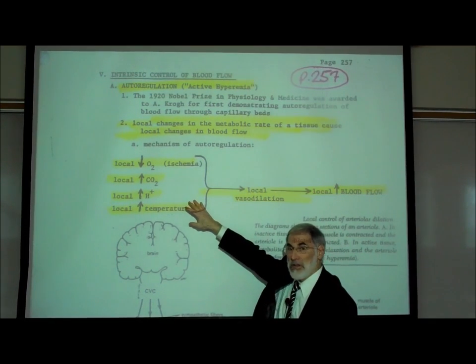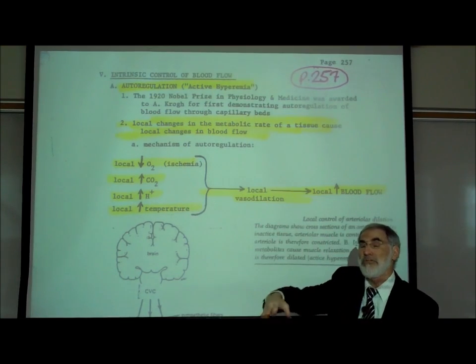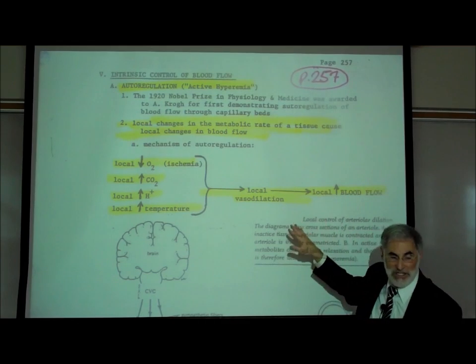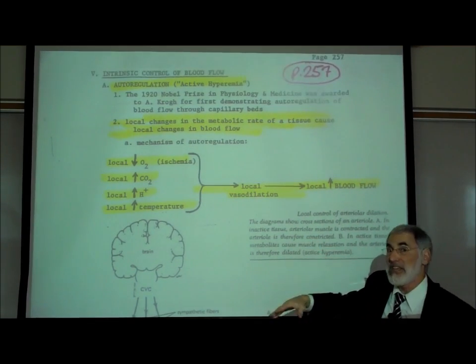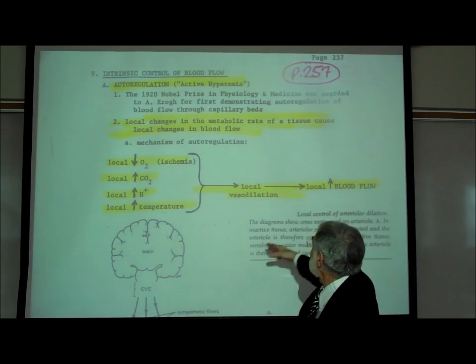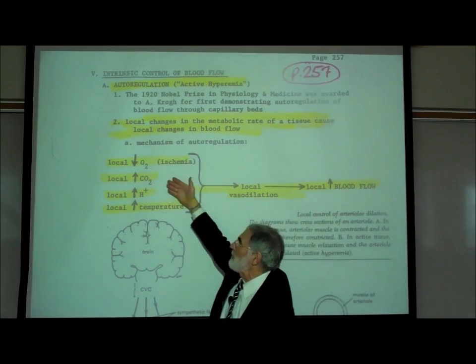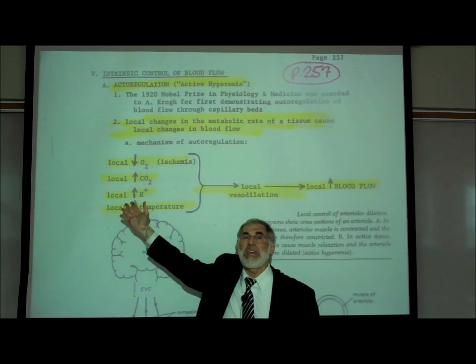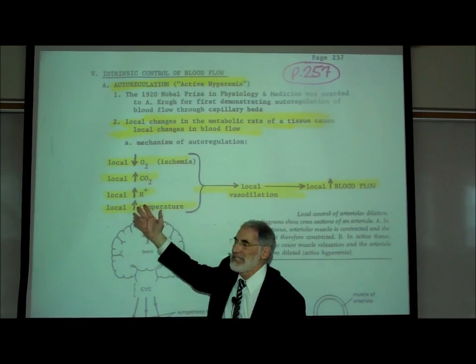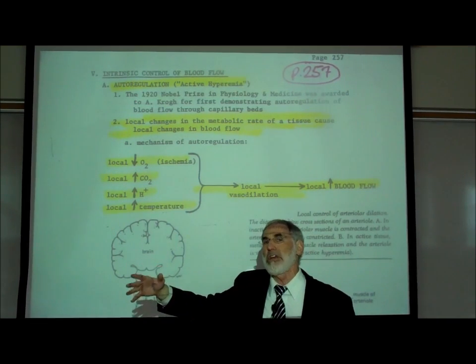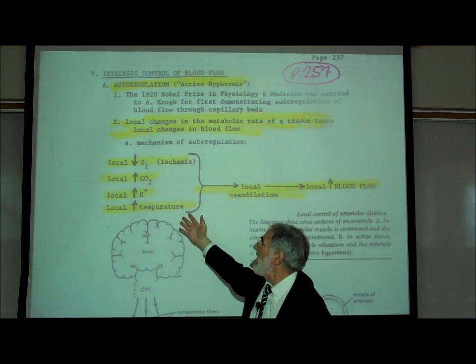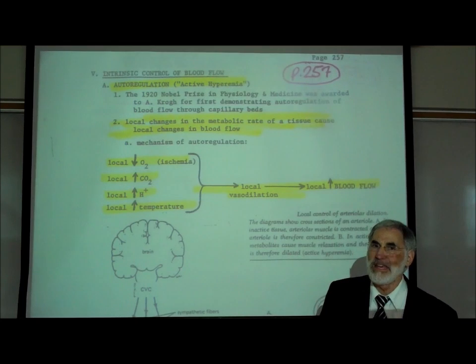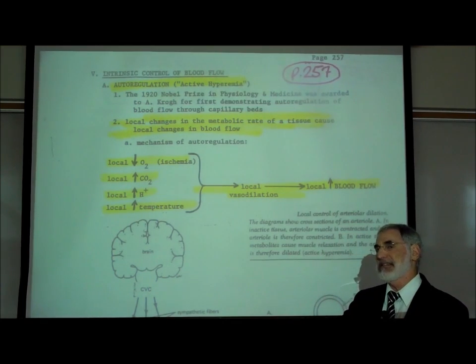And these localized changes cause the blood vessels in that localized area to dilate increasing blood flow. Obviously, the benefit of that is that increased blood flow will deliver increased amounts of oxygen to the active tissues. It will carry away the excess carbon dioxide, it will carry away the excess acidity, and it will act to lower the temperature by increasing blood flow. So that's how it compensates.